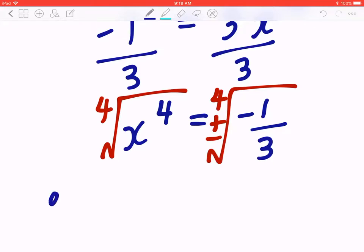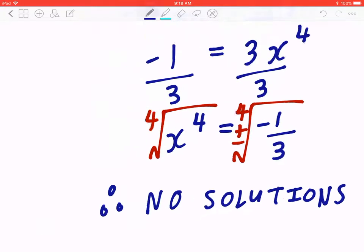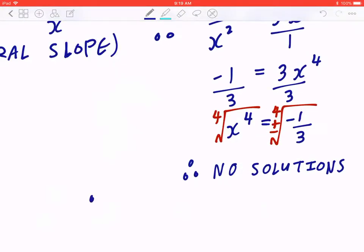So, this means, therefore, there are no solutions. Which means, therefore, they never have the same slope.